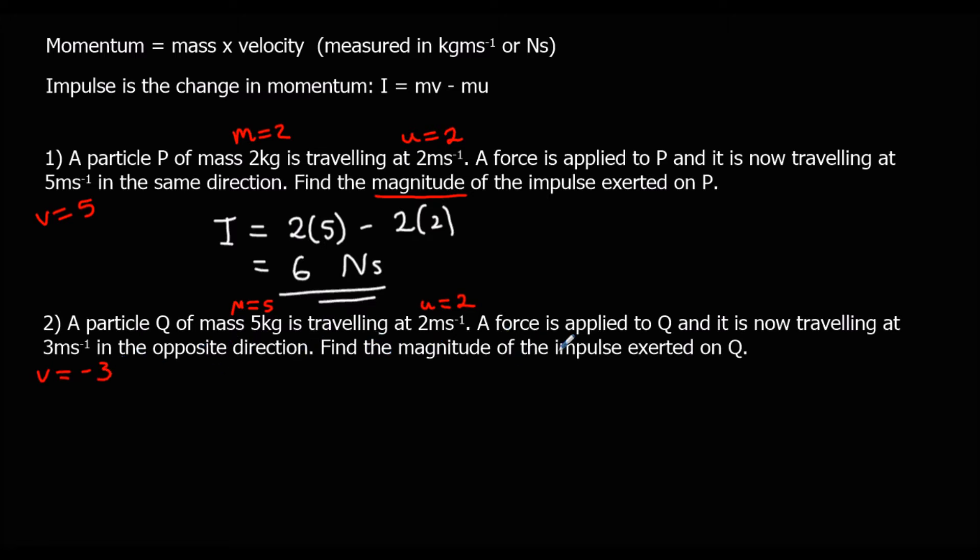Find the magnitude of the impulse exerted on Q. So impulse equals MV. So 5 negative 3s minus MU, five twos. So we've got negative 15 take away 10, which is negative 25. But we only care about the magnitude. We don't care about direction. So we can say the impulse, the magnitude of the impulse, is 25 newton seconds.